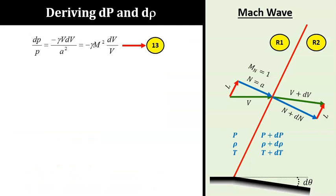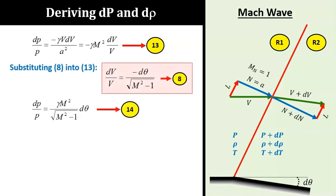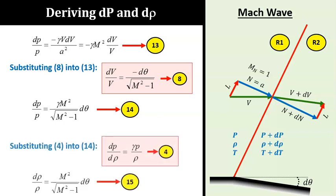Next, we need to work on equation 13 further. Remember that equation 8 relates dV over V to dθ. We can use this back into 13 to relate dP over P with dθ, as in equation 14. Then, we will use the relationship between dP and dρ in equation 4 to get equation 15, that relates dρ over ρ with dθ. This is our last puzzle to complete the Prandtl-Meyer function.